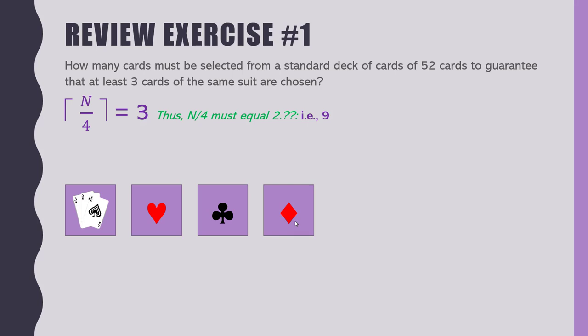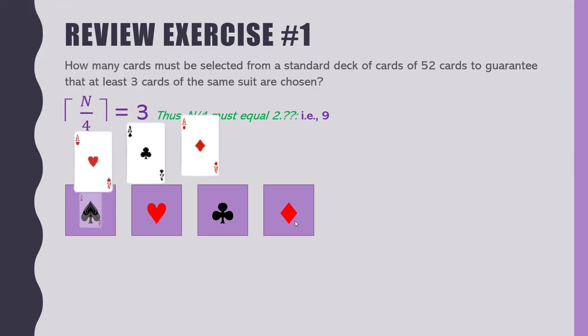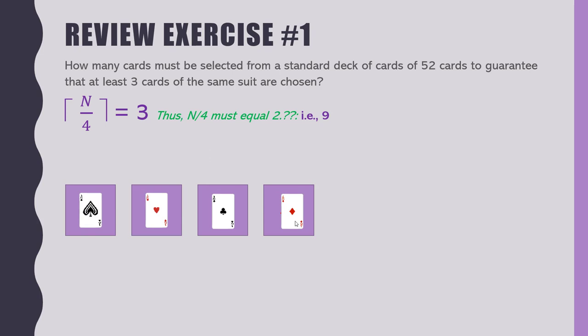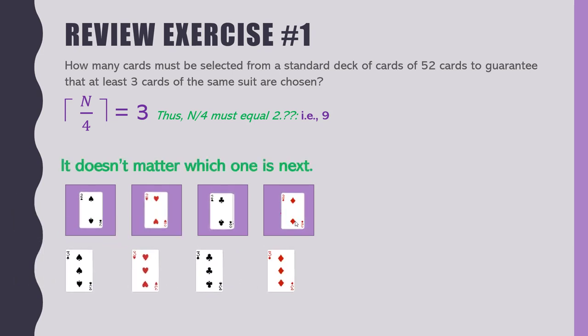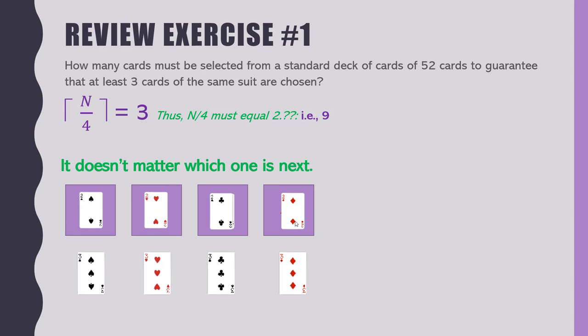So we're looking at the worst case scenario — like our sock problem. What's the minimum number of socks to guarantee at least a pair? In the worst case, place one of every suit in each box. Round one: one card per suit. Round two: same thing, now every box has two in it. When that third card is ready to go in, no matter which box it goes into, that box will have three cards in it.